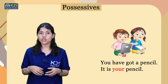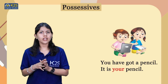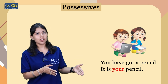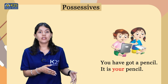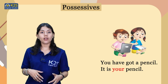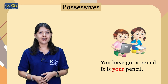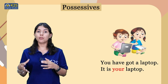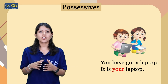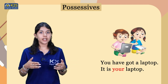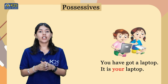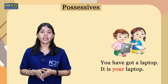In the next picture there are two children doing their work. The girl is holding a pencil in her hand, so the boy is saying: You have got a pencil. It is your pencil. The possessive here is 'your'. The boy is also holding a laptop, and the girl is saying: You have got a laptop. It is your laptop. So the possessive here again is 'your'.